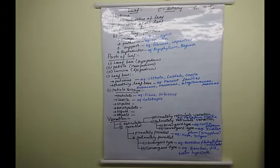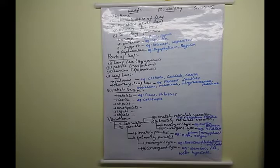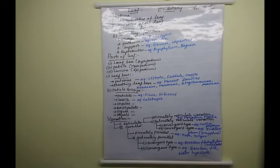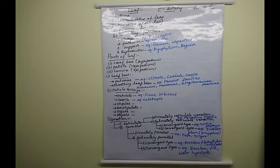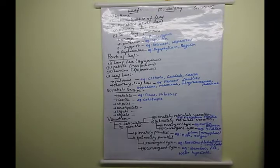Next, what are the characteristic features of the leaf? The leaf is the lateral appendage of the stem. Leaves are born at the nodal part of the stem — you know the node and internode regions. The leaf shows exogenous origin, meaning external growth of these structures. They do not possess an apical growing part.